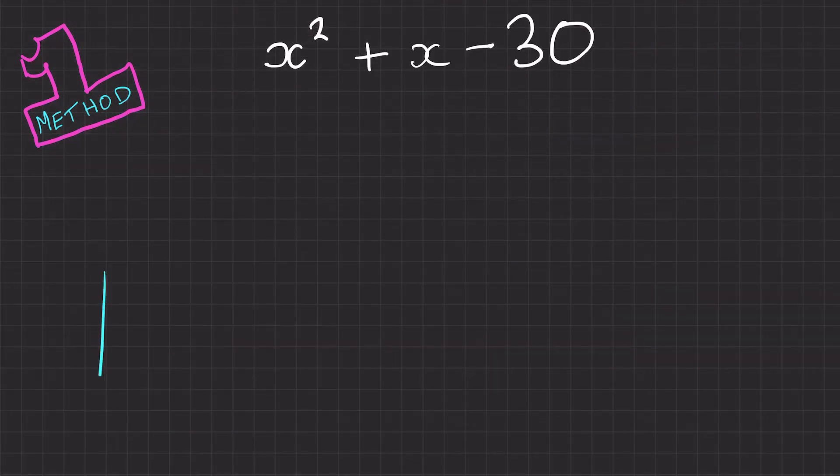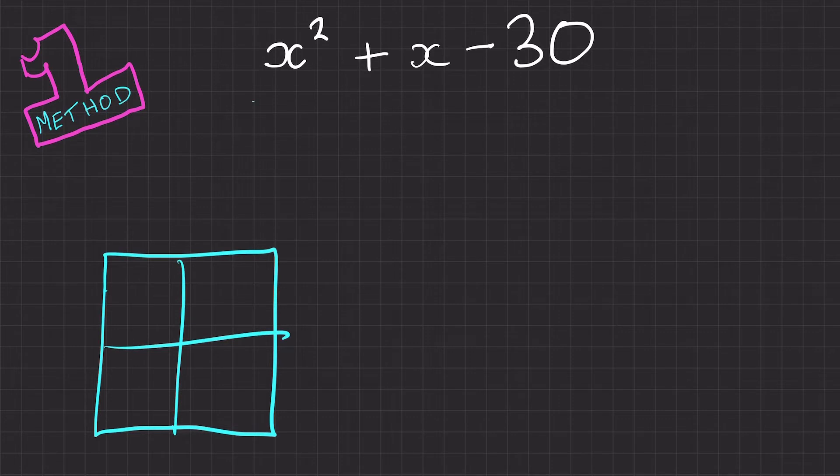One more question but with tricky numbers, so I'm going to draw my grid out. We've got x squared, which is going to be here and it's going to be x multiplied by x to get x squared. Then we've got minus 30 which goes in here. Then we want to find a pair of factors of 30 that can multiply together to get minus 30, but add together to get plus 1 because we've got plus 1x.